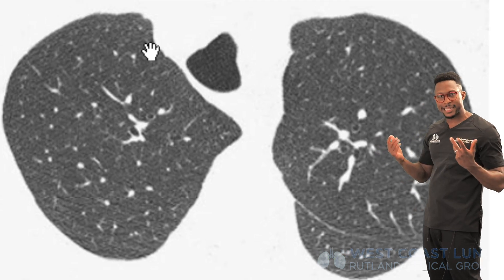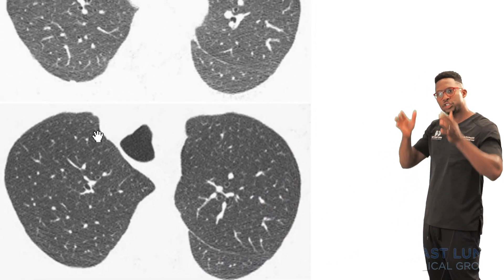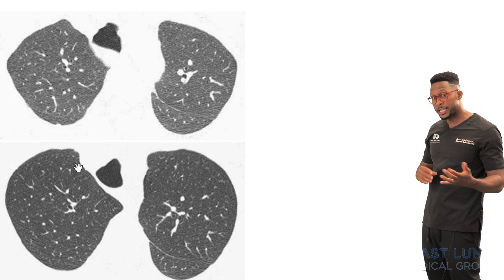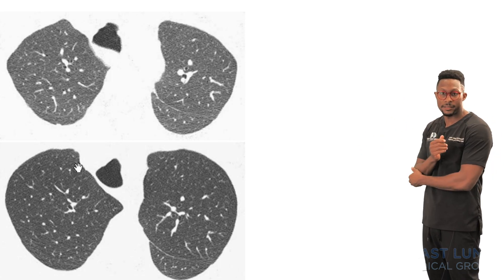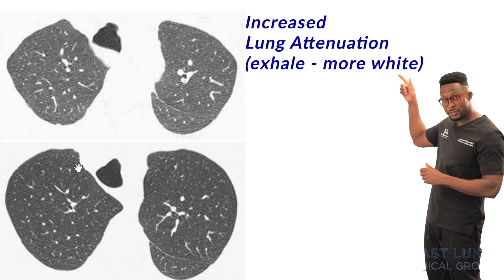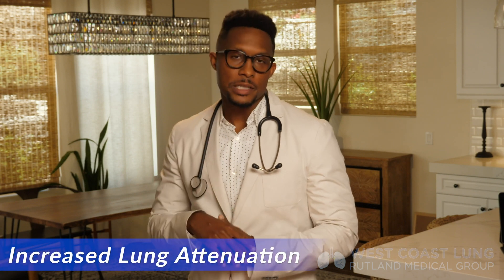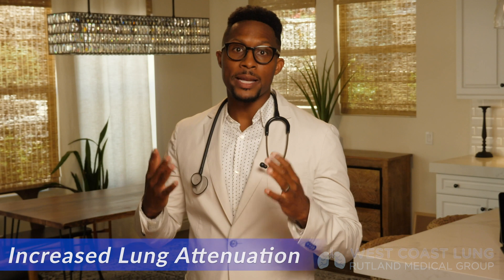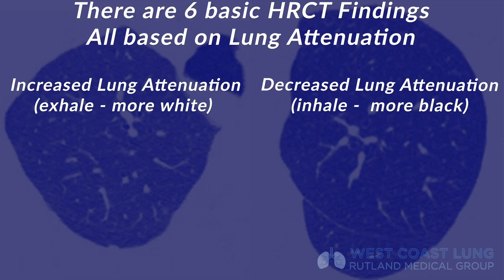Whenever you're looking at a CAT scan and scrolling through it, just have an overall look at the lung. Is it blacker than you think? Is it whiter than you think? If it is, all you have to do is say to your attending: increased lung attenuation or decreased lung attenuation. So let's go through the three basic findings of increased lung attenuation.